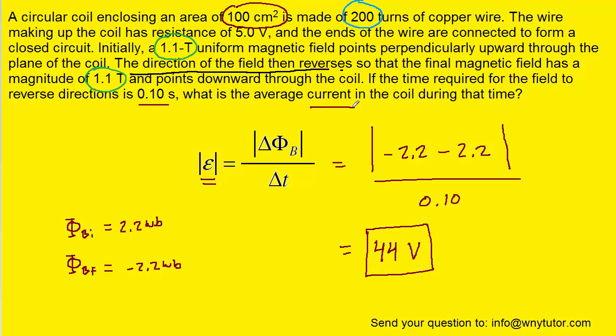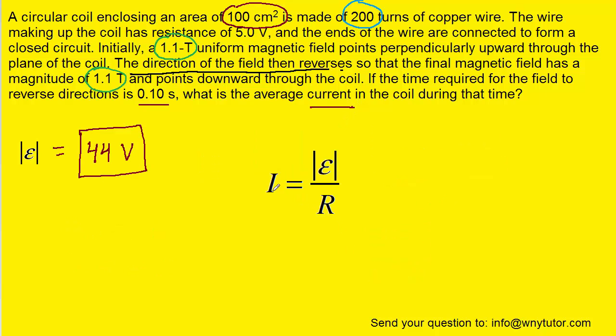To get the current, we simply have to remember the following relationship. That the current is equal to an EMF divided by the resistance. Some of us might remember this equation from a previous chapter as equaling volts, or electric potential, divided by the resistance. It's basically the same equation. So we're just going to plug in the induced EMF we just calculated, and then the resistance in the coil was given to us as being 5 ohms.